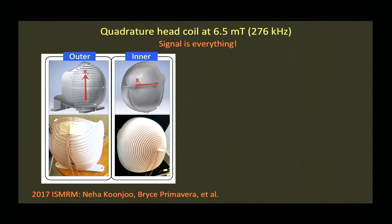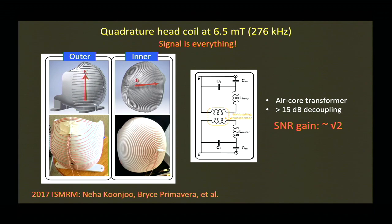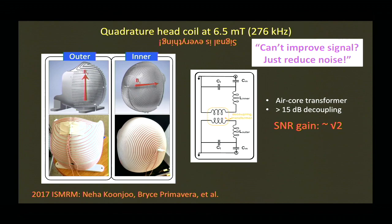We've advanced to quadrature coils — the inner quadrature was shown before, and the outer quadrature gives B1 in the orthogonal direction. These are decoupled mostly geometrically, with an air-core transformer providing about 25 dB decoupling between them. We get a gain of root-2 in SNR. The standing joke in my lab was: we can't improve the signal anymore — we're already getting both quadratures, we have the most efficient sequences. So can we just reduce the noise? That was a running joke until my postdoc Boju joined about three years ago and took it very seriously.